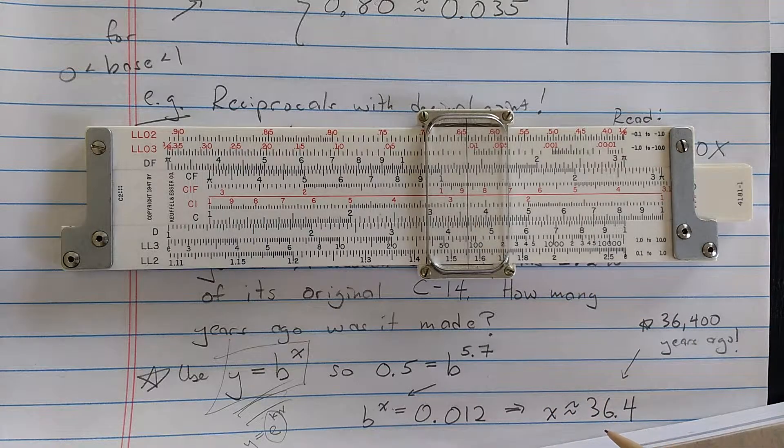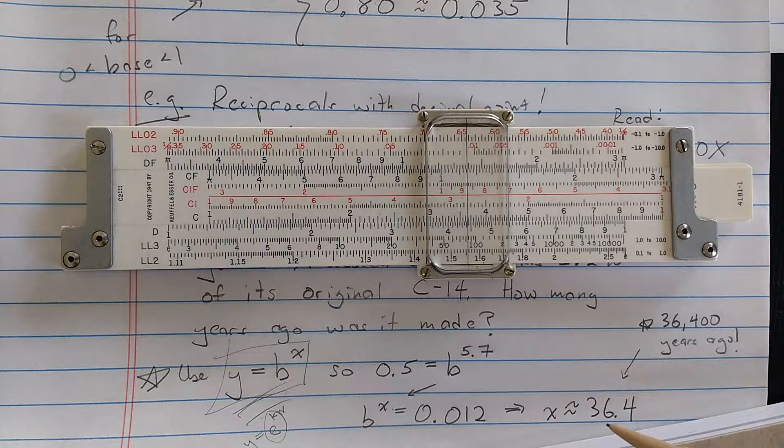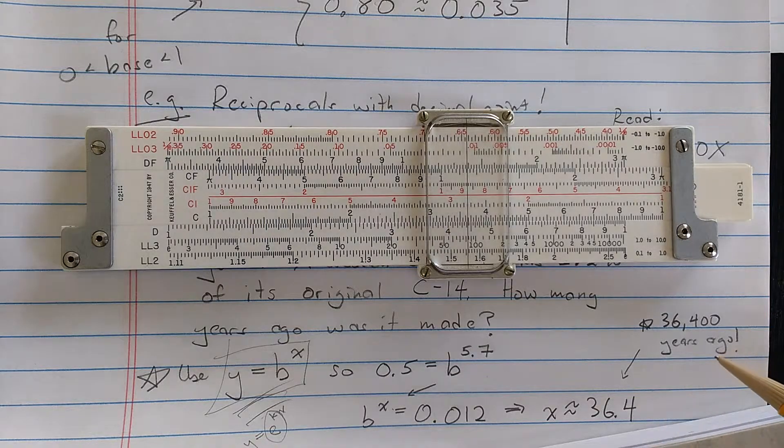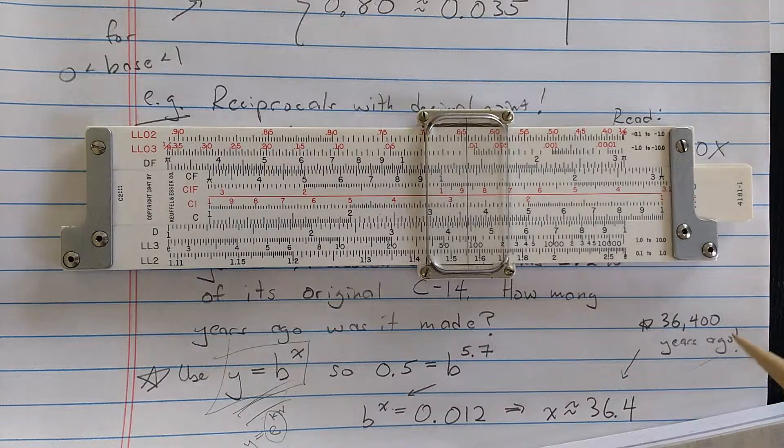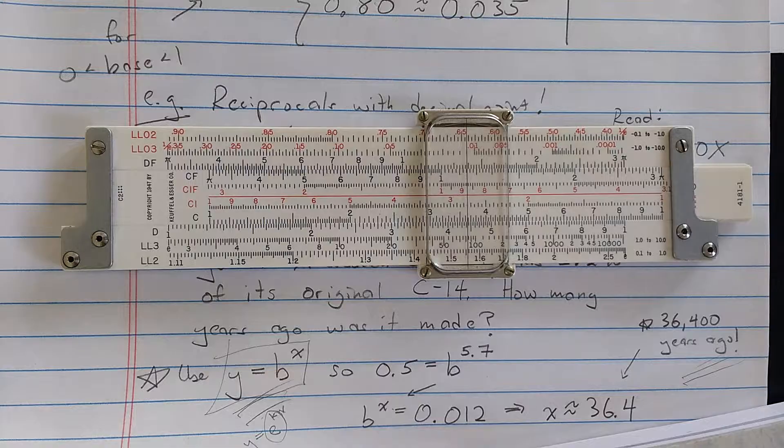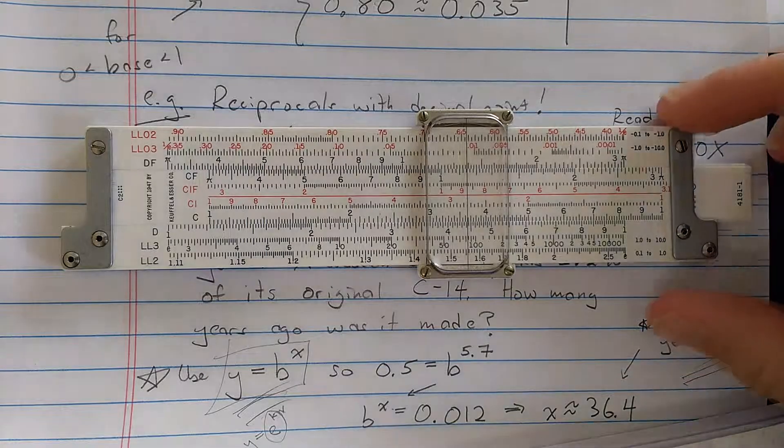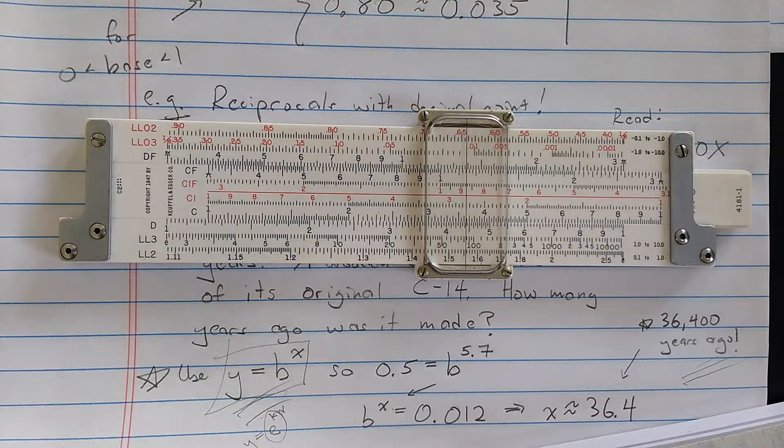And so then here, this is not exponent 3.64. This is exponent 36.4. So that x is 36.4. And then, of course, x is in thousands of years is the way I've solved the problem. So there is a very fast solution to exponential growth and decay problems using the slide rule.